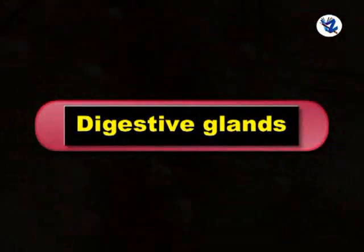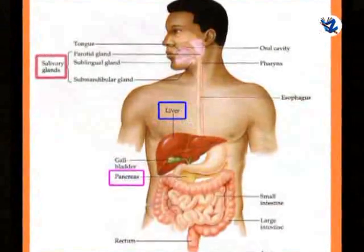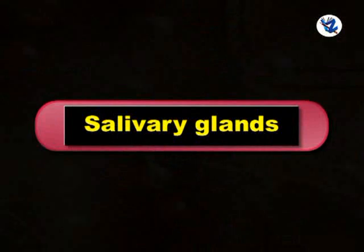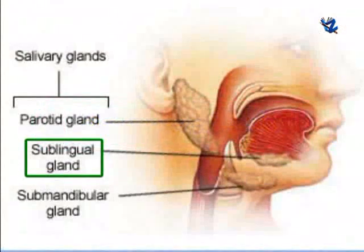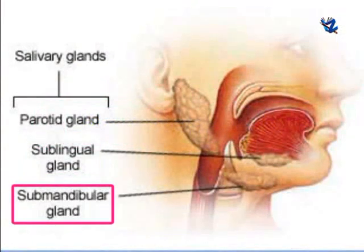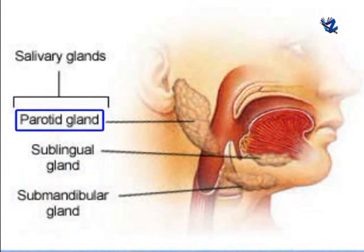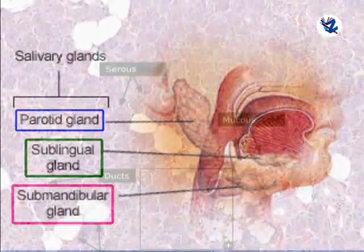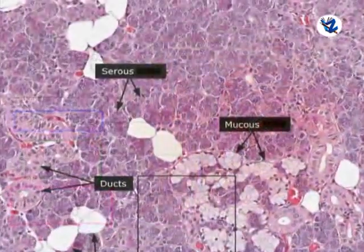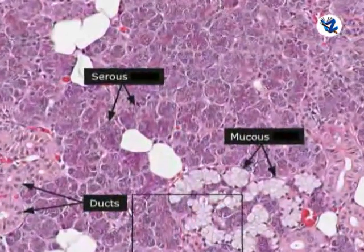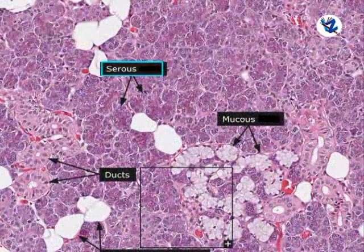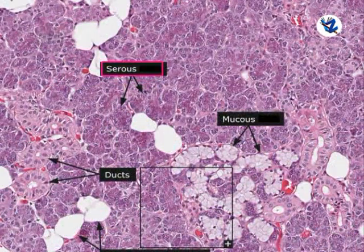Then digestive glands — these include the salivary glands, liver and pancreas. Salivary glands: sublingual (below tongue), submandibular (below lower jaw) and parotid gland (in front of the ear) are three pairs of salivary glands. They produce saliva. Serous cells and mucus cells are two types of secretory cells present. Serous cells produce enzymes — salivary amylase or ptyalin — while mucus cells produce mucus.